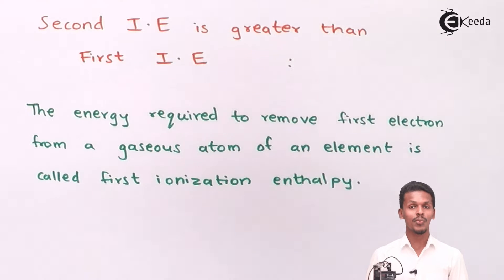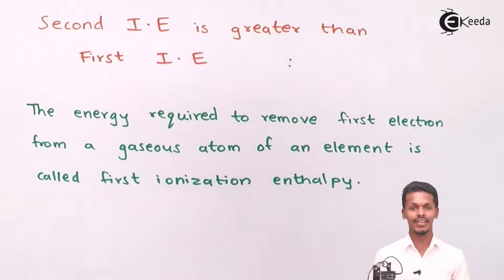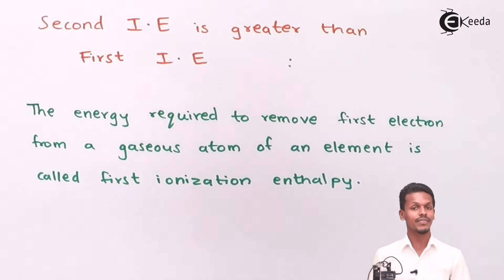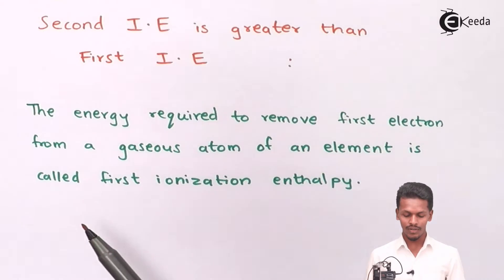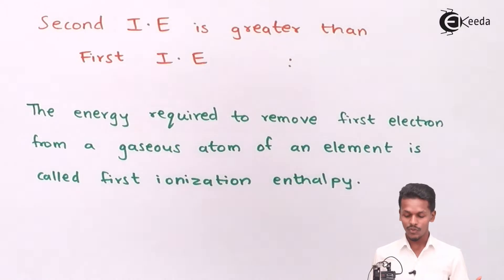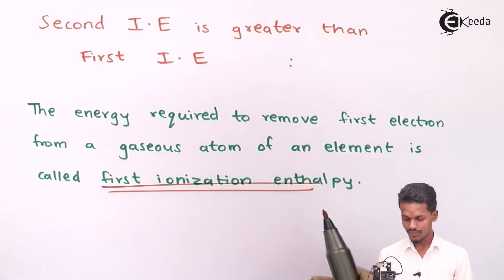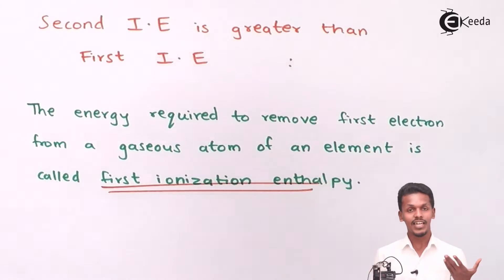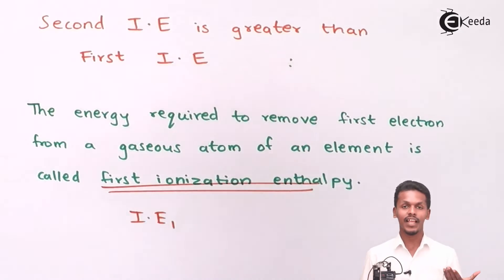Now we are going to talk about why the second ionization enthalpy is greater than the first ionization enthalpy. But before that we should know what the first ionization enthalpy is. The first ionization enthalpy is the energy required to remove the first electron from a gaseous atom of an element, and it is denoted as IE₁.